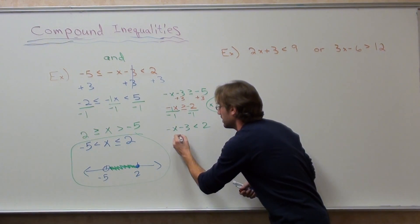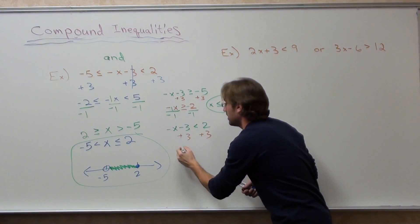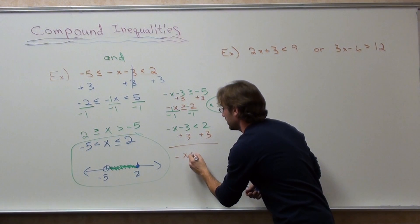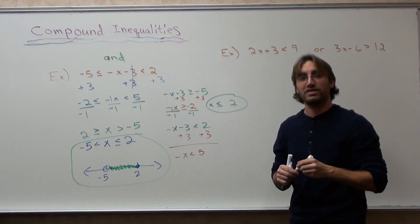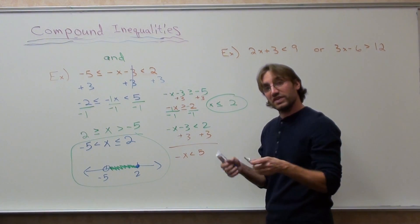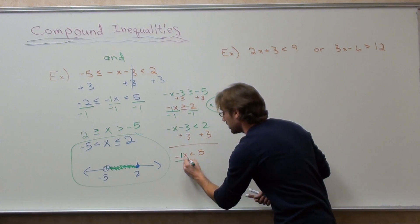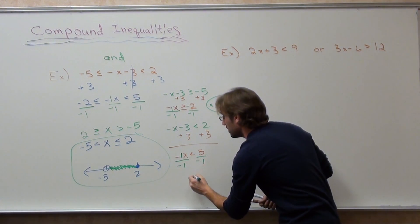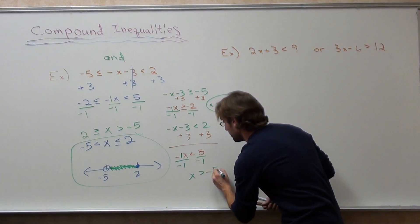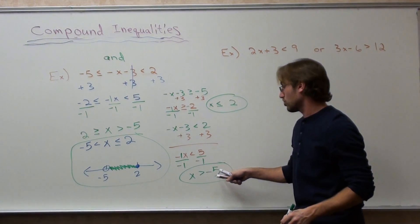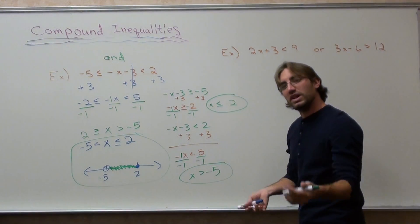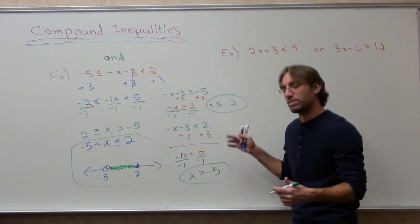Next one. Add 3 to both sides. Is less than 5. Divide by negative 1 to get rid of that negative in front of the x. And the x is greater than negative 5. And if you want to plot both of these at the same time, which is what you're supposed to do.